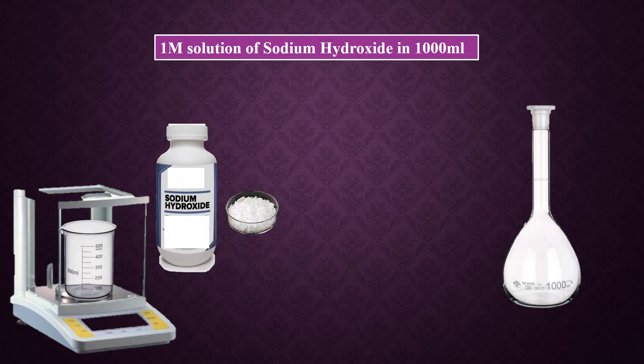In my previous video, I discussed the preparation of a molar solution of sodium hydroxide in 1000 milliliters. But if we need only 100 milliliters instead of 1000 milliliters, it is better to make 100 milliliters of solution rather than 1000 milliliters, to reduce wastage of chemicals.